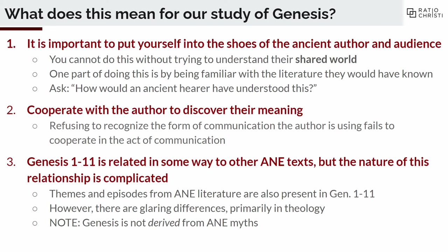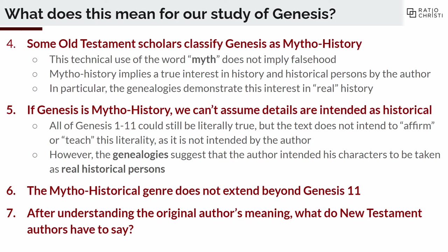Genesis is related in some way to other ancient Near Eastern texts, but the nature of this relationship is complicated. We looked at the Trahazos epic and the Sumerian king lists, and saw some interesting similarities and some significant differences. All of this leads into the idea that a number of people have come to classify Genesis 1 to 11 as something on the order of mythohistory — a historicizing myth combining an interest in history and mythic elements similar to other ancient Near Eastern cultures' myths.